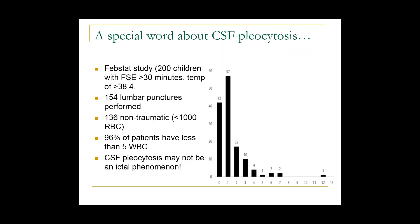Pleocytosis — elevated white blood cells in the CSF — comes up often. The Febstat study looked at 200 children with febrile seizures lasting longer than 30 minutes and temperature greater than 38.4 degrees centigrade. Of over 150 LPs performed, 136 were non-traumatic, and 96% of patients had less than 5 white blood cells. So if anyone has 6 or more white blood cells, I would not write that off as just a febrile seizure — CSF pleocytosis may not be an ictal phenomenon, and we must look at infectious etiologies.